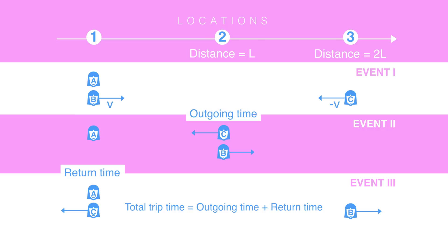To work those out, we need to figure out the location and duration of each event according to each observer. We can start with observer A. There are three places and times that are important. They are when the experiment starts, when the two ships pass one another, and when observer C zooms by.